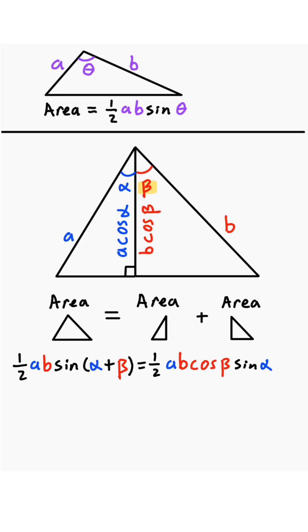Now, for the triangle on the right, we're going to use this beta, this side B, and instead of B cosine of beta, we're going to use A cosine of alpha. So this area is going to be one half times B times A cosine of alpha times sine of beta.